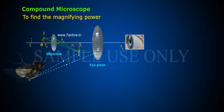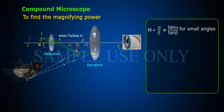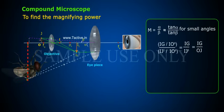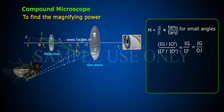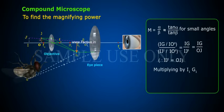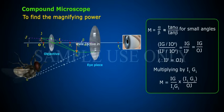To find the magnifying power M: M equals alpha by beta, equivalent to tan(alpha) by tan(beta) for small angles. This gives IG by IO'' divided by IJ' by IO'', which equals IG by IJ'. Therefore IG equals IJ', and IG by OJ, therefore IG' equals OJ.